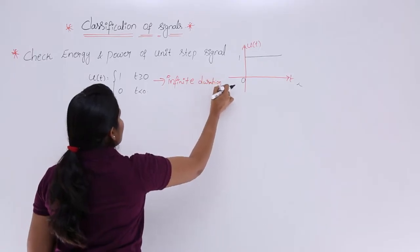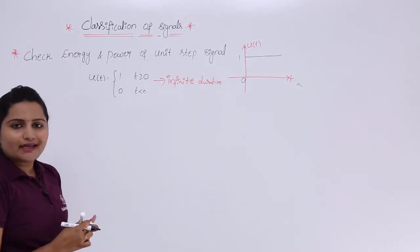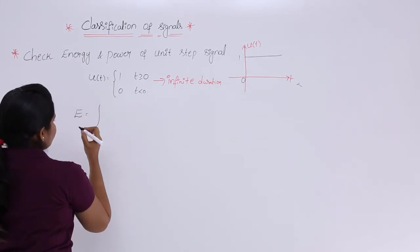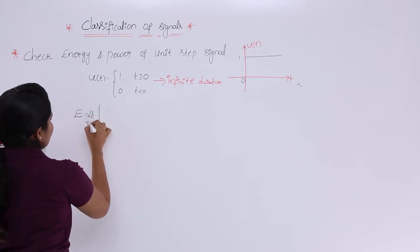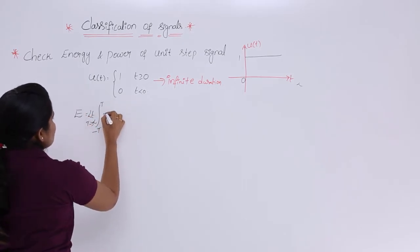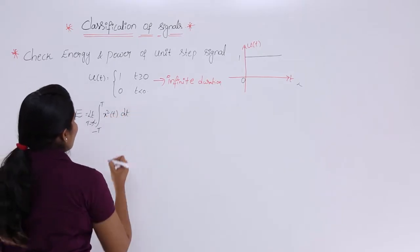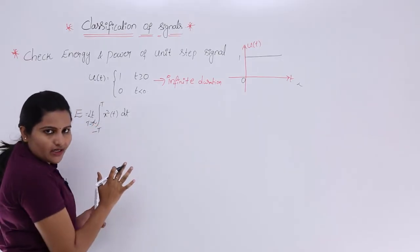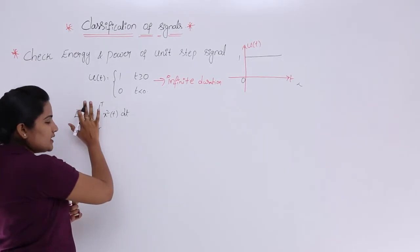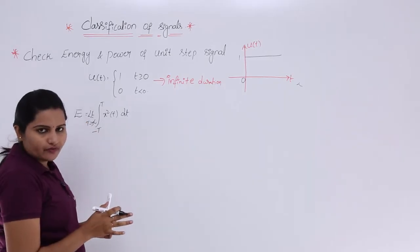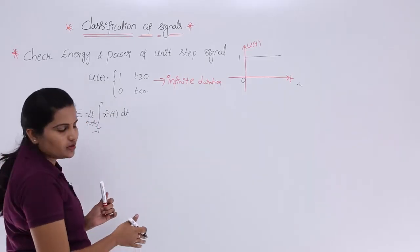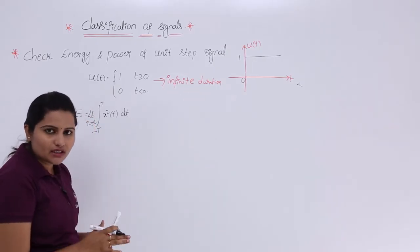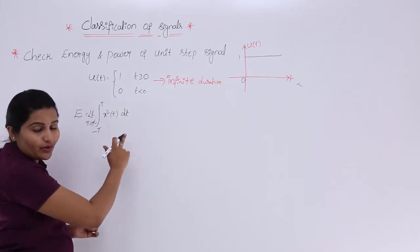For an infinite duration signal, the energy formula is: E = limit as T → ∞ of the integral from −T to T of x²(t) dt. In previous classes we calculated energy without this limit because the signal was finite duration. Here, since the signal is infinite duration, we must use the limit T → ∞.